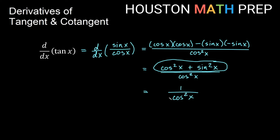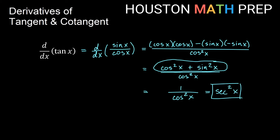This expression is saying that we have the reciprocal of cosine x, squared. And we should know from trig that the reciprocal of cosine is secant. So this is actually secant squared x because we have cosine squared x on the bottom. So we now know that the derivative of tangent of x is secant squared of x.